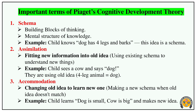Assimilation means applying an existing schema to a new situation. For example, a child sees a cow. They use their old idea — four legs — and call the cow a dog. They are assimilating the new object into their existing schema.